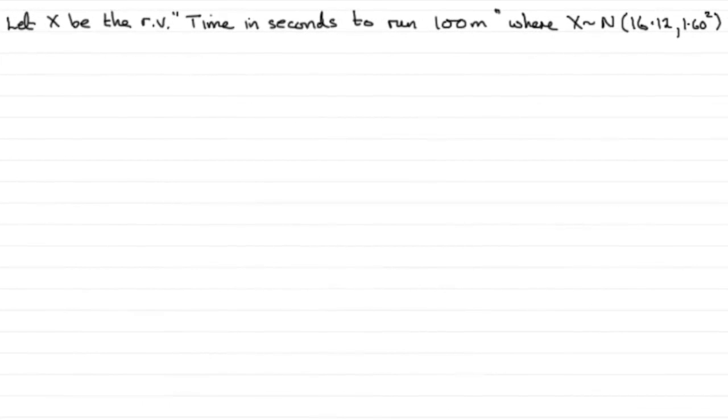Okay then, so to do this question, what I've done is I've introduced a random variable. Let X be the random variable, time in seconds to run the 100 meters, where X is distributed normally with the mean that we're given, 16.12 seconds, and we're also given the standard deviation was 1.60 seconds, but we have to put the variance in here, so I've written 1.60 squared, the standard deviation squared.